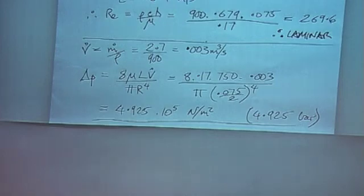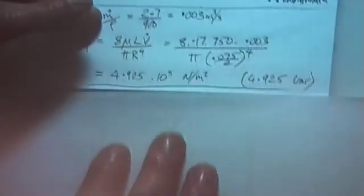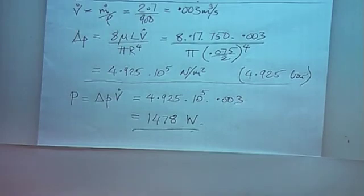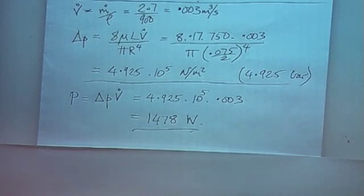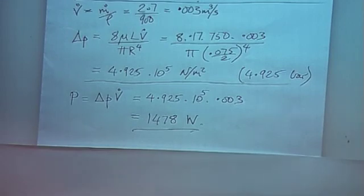Cutting to the chase, the pressure drop predicted by this formula is 4.925 bar. From which, plugging the pressure drop and the volume flow rate into the power equation, the bottom line is 1.48 kilowatts — or 1478 watts — are required to sustain this flow rate of fluid under the given conditions.